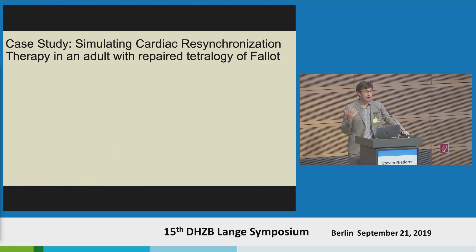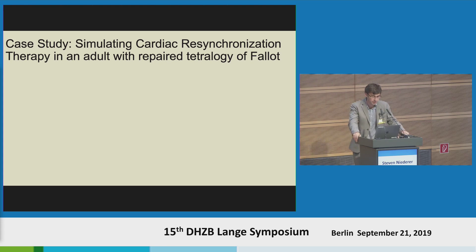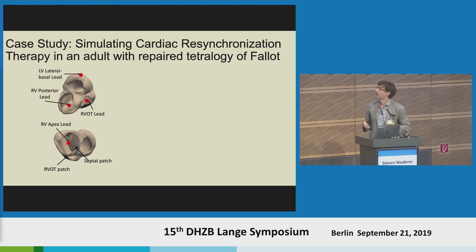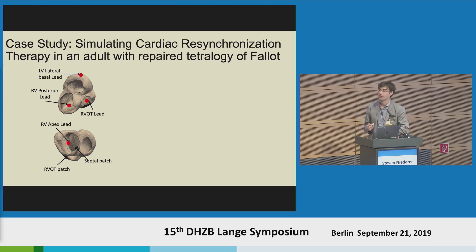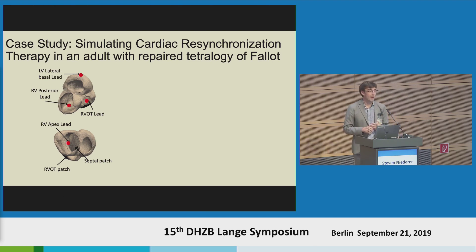Most of our work is focused on the adult population, but I wanted to give an example of how we could use this technology in congenital heart disease. A question posed to us by a colleague at the Brompton, Sonia Babanurayan, was how could we simulate CRT in repaired tetralogy of Fallot patients? We can get an MRI and look at the different possible lead locations — RV apex, RV outflow tract, RV posterior wall, RV lateral wall — non-invasively, and have a conversation with the cardiologist about where to place these leads.